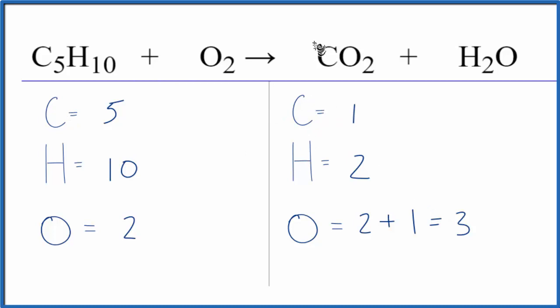Let's do the carbons first. Put a five in front of the CO2, one times five, so now the carbon atoms are balanced. We need to update the oxygens, so two times five is ten plus the one, now we have eleven.